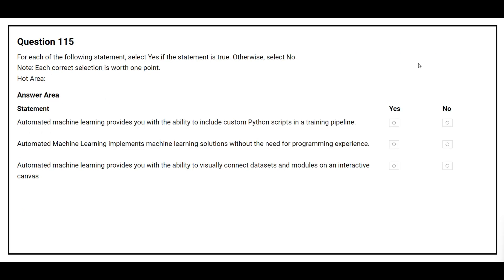Option number 115. For each of the following statements, select yes if the statement is true. Otherwise, select no. The first statement is: automated machine learning provides you with the ability to include custom Python script in a training pipeline. The correct answer is no. The second statement is: automated machine learning implements machine learning solutions without the need for programming experience. The correct answer is yes. The third statement is: automated machine learning provides you with the ability to visually connect data sets and modules on an interactive canvas. The correct answer is yes.